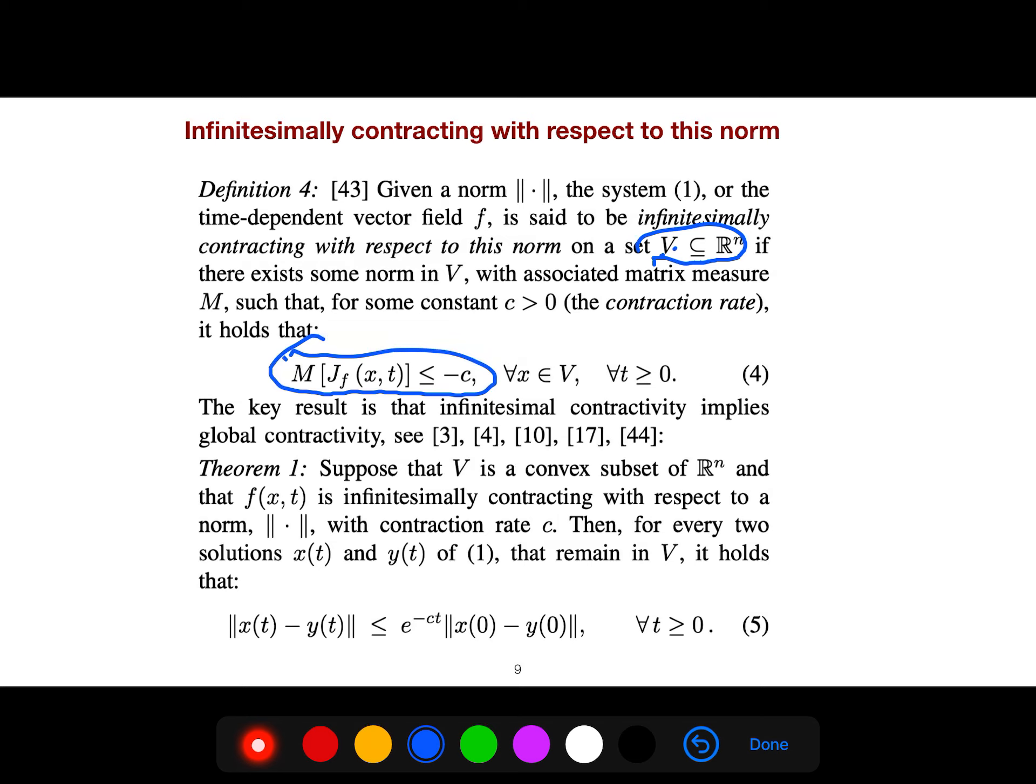And the key result is this theorem that says if it is infinitesimally contracting, then for every two solutions, X and T, for example, it starts at X0, another initial point is Y0, then they converge to each other. So the trajectory converges to each other. The distance between them reduces until it becomes 0.